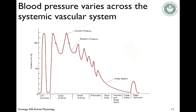Blood pressure varies across the systemic vascular system. In the left ventricle, the pressure shoots way up and goes way down, but as it goes into the arteries, it's evened out. You can see that the peak is the systolic pressure and the little valleys are the diastolic pressure. As it branches and branches, pressure slowly decreases and evens out until it reaches the capillaries, and then back to the veins and the right ventricle.